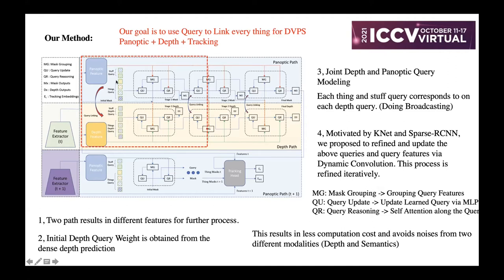We propose to refine and update the queries and query features using dynamic convolution. This process is refined interactively and repeatedly in three steps: first, mask grouping — we use the unified query to predict a mask and group the pixel features; second, we use the grouped query features to update the object query via dynamic convolution; finally, we apply self-attention along the object queries. This introduces much less computation cost than standard self-attention and avoids noise from different modalities, since all operations are at the query level.